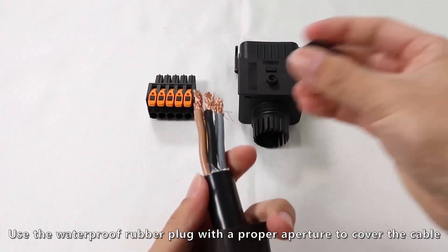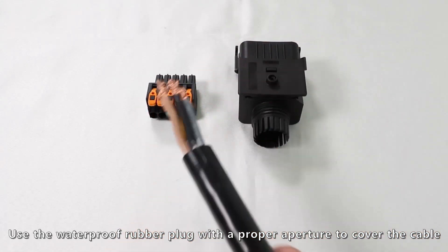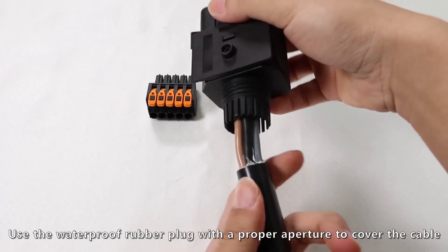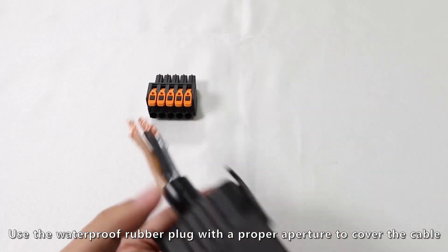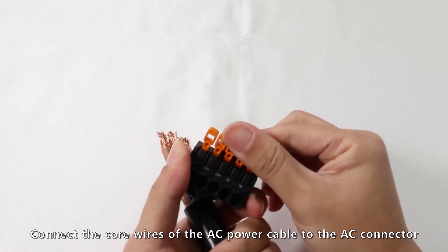Use the waterproof rubber plug with a proper aperture to cover the cable. Connect the core wires of the AC power cable to the AC connector.